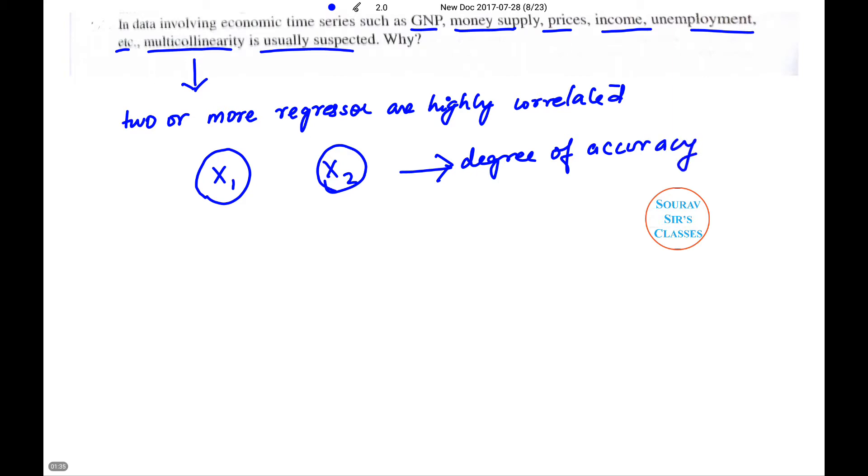Let me make it very simple. That means x1 and x2 will be related to each other. So if this happens then there will be multicollinearity.